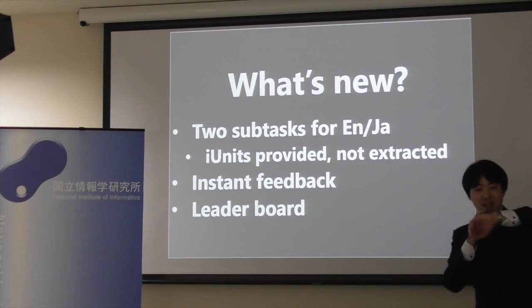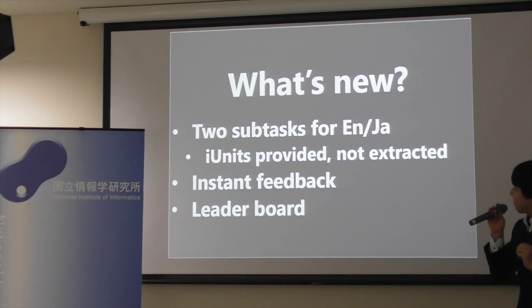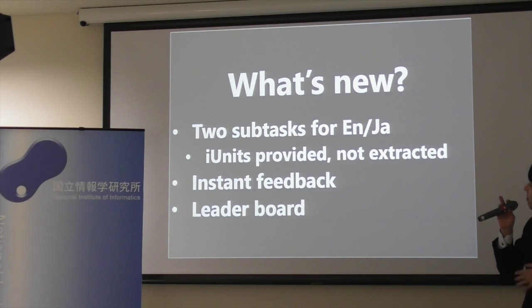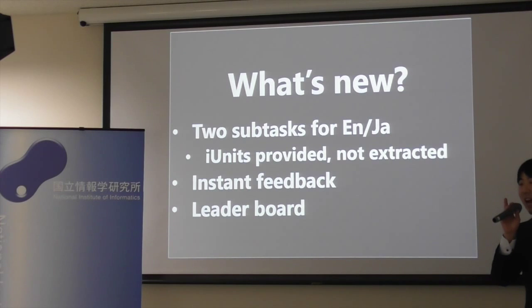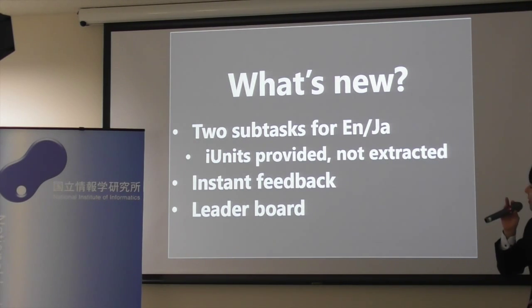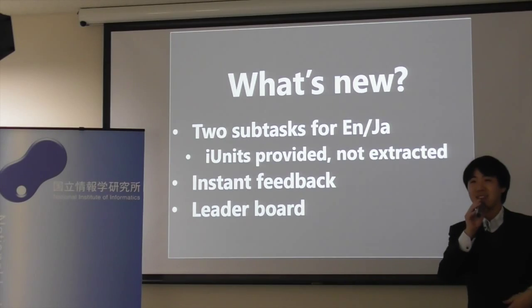As a second round, we have some different things from Mobile Click one. This is similar to Mobile Click one, but we will have two subtasks for English and Japanese. We will provide iUnit, and you don't need to extract iUnit — I'll explain this later. We will provide instant feedback, and you can see the leaderboard so that you can see results of other teams.